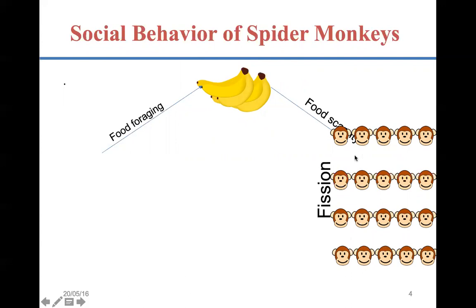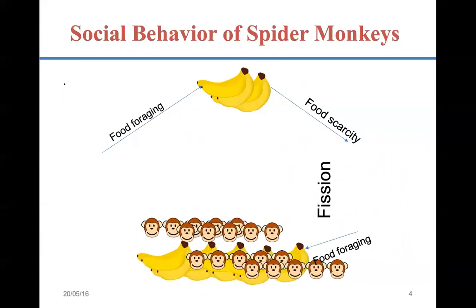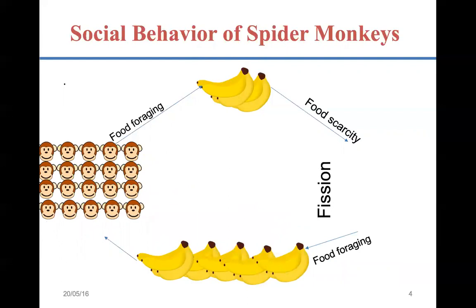All these small groups now go to different directions and find different food sources separately. For each smaller group, there is less competition for food, so food scarcity is fulfilled. Throughout the day they keep on making this fission process. In the evening, they return to the same habitat where they live, and this process is known as the fusion — small groups again fuse into a single big group. So this entire behavior is known as the fission-fusion social structure.